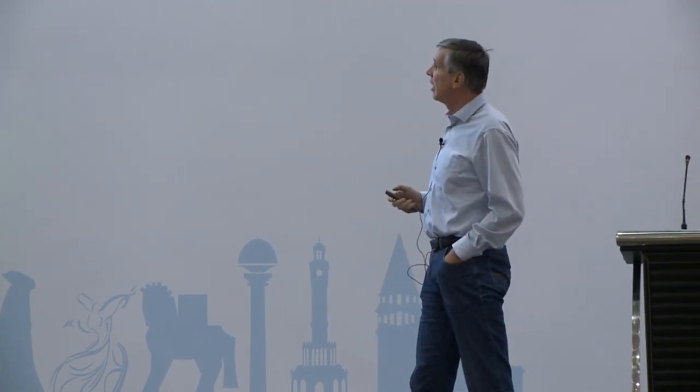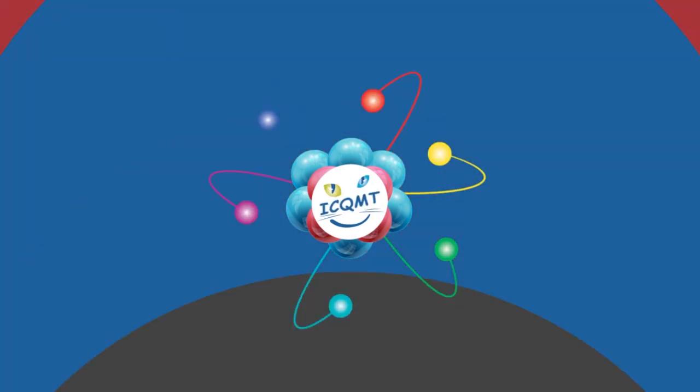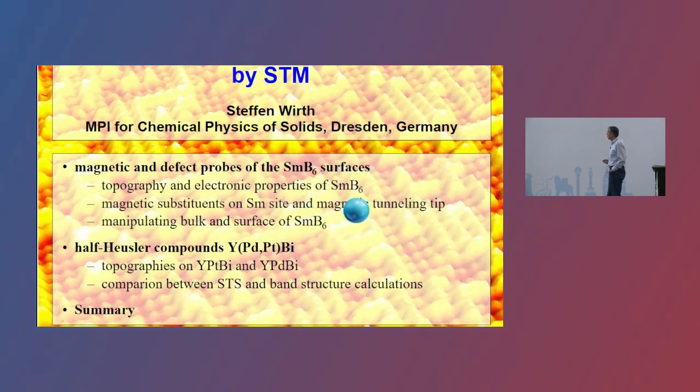The first one is a Kondo insulator, a strongly correlated material, samarium hexaboride. And the second class of material is half-Heusler compounds: yttrium-palladium bismuth and yttrium-platinum bismuth.